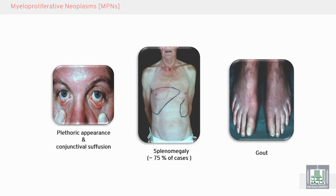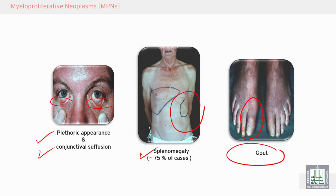We can see here the plethoric appearance — red color skin on the face — conjunctival congestion, and dilatation of the blood vessels. Also, splenomegaly with a large spleen, and inflamed, painful big-toe joints called gout, due to increased uric acid production.